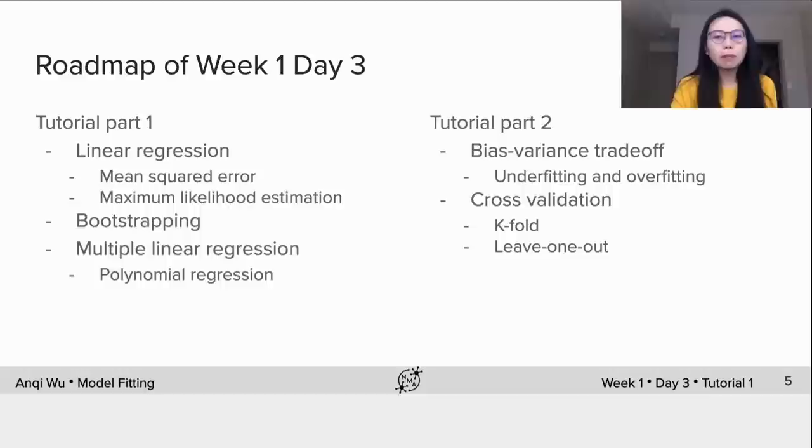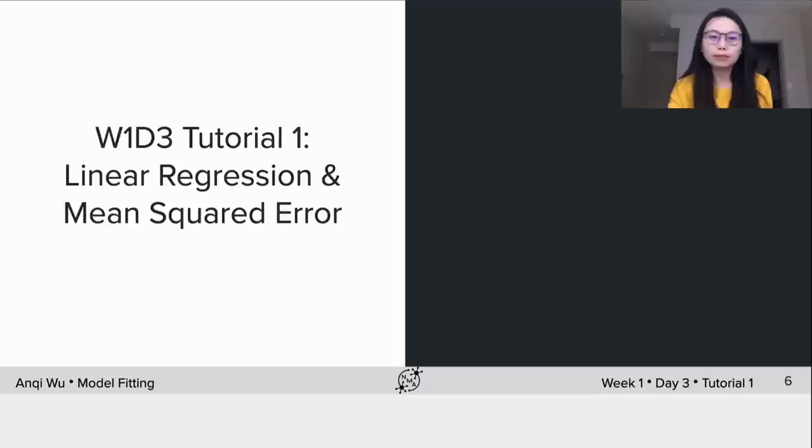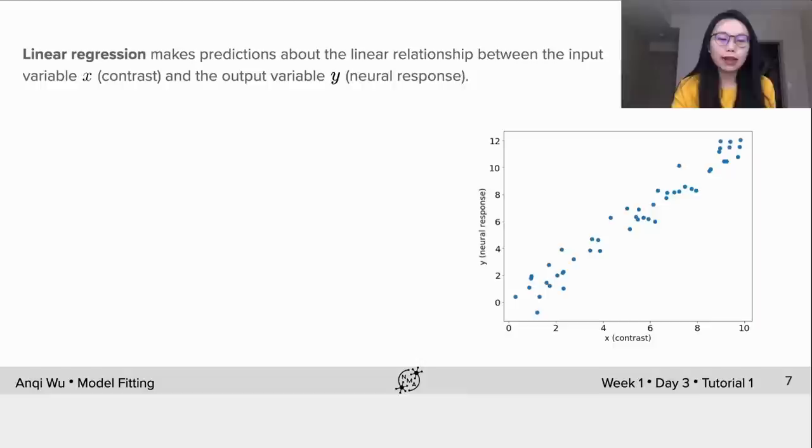Okay, so the first topic is linear regression and mean squared error. Linear regression is a machine learning algorithm that makes predictions about the linear relationship between the input variable X and the output variable Y. Here we can assume X to be the contrast of the input stimulus and Y to be the neural response of a single neuron. We can plot the observed X and Y on the right here.